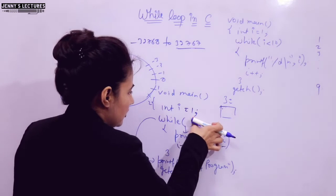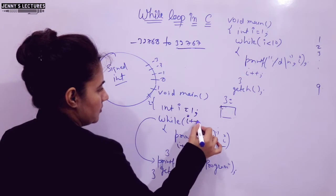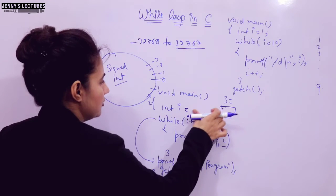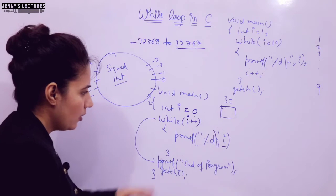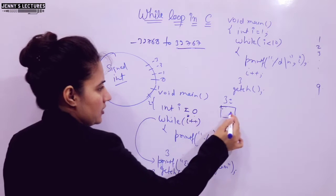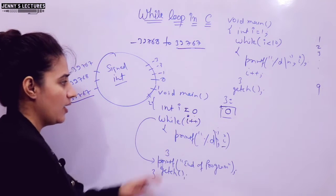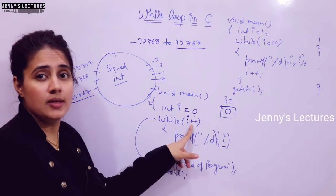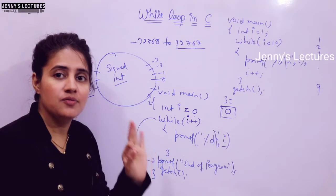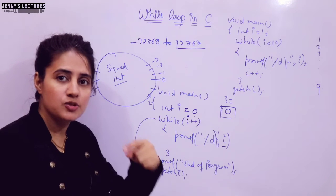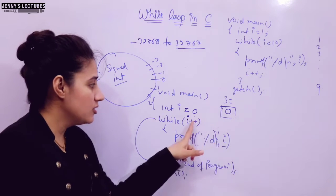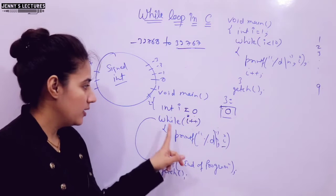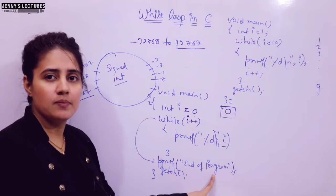Now suppose you write `while(i++)` with `i = 0`, and remove the `i++` from inside the loop body. Since this is post-increment, the original value of `i` — which is 0 — is used first for the condition. 0 means false, so the loop does not execute even once. Control exits immediately and only end of program is printed.